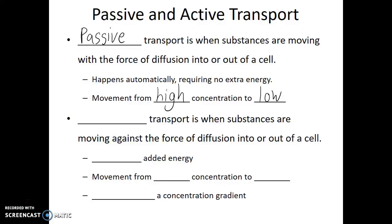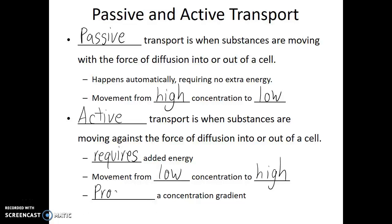You can think of diffusion as a force like a current — it is possible to fight against a current, but it's going to take a lot of energy. If a cell wants to move something against the force of diffusion, it can do that, but it's going to take some energy. This is known as active transport. Active transport is when substances are moving against the force of diffusion into or out of the cell, requires added energy, and involves movement from a low concentration to a high concentration. Active transport will also generate a concentration gradient.